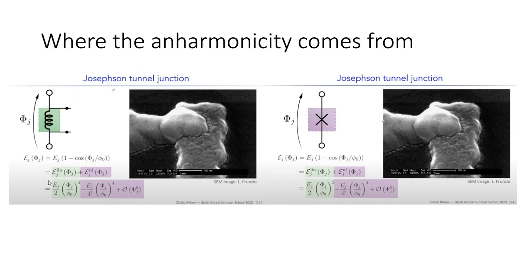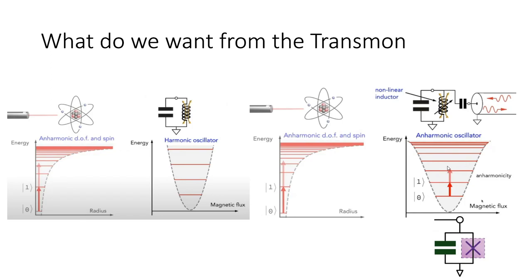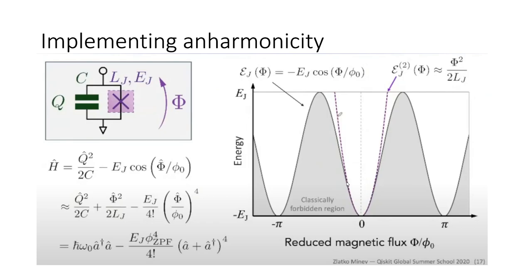We can split this cosine into a linear term and a nonlinear term. The linear term in green corresponds to a linear inductor, and the purple term corresponds to the Josephson junction nonlinear part — that's the part that produces the anharmonicity we need to isolate these two states. So we know we can implement this anharmonicity, but going from theory to the physical implementation is a whole different story.